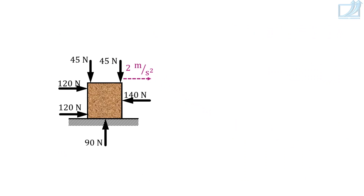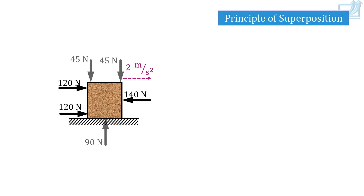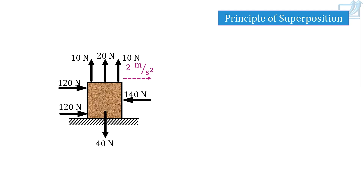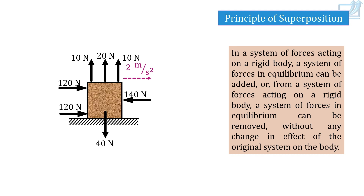What is the total vertical force acting on the box? It is zero. So removing those three vertical forces, the box is still moving with acceleration 2 meters per second squared rightwards. Similarly, if I apply four vertical forces whose sum is zero, it is as good as no vertical force is applied — the box still moves with acceleration 2 meters per second squared. This is the principle of superposition: in a system of forces acting on a rigid body, a system of forces in equilibrium can be removed without any change in the effect of the original system.